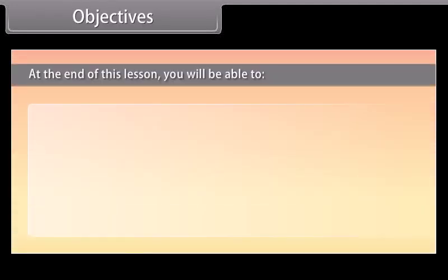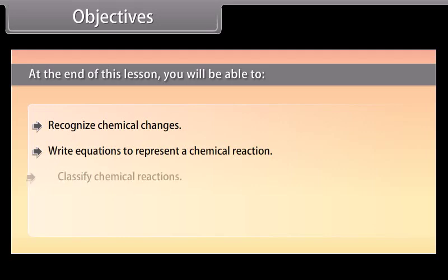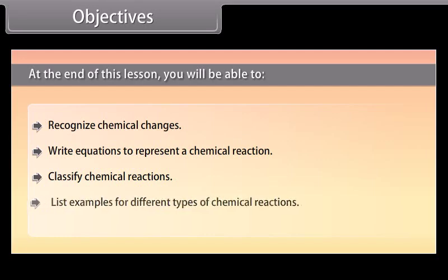Objectives: At the end of this lesson, you will be able to recognize chemical changes, write equations to represent a chemical reaction, classify chemical reactions, and list examples for different types of chemical reactions.